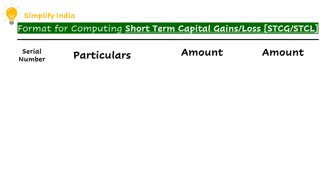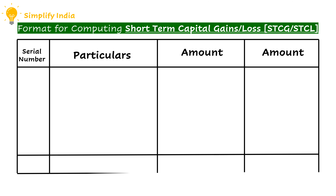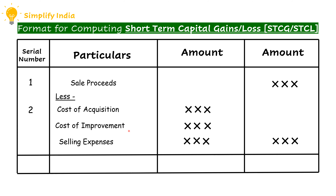Let us start with today's topic. First, we are going to learn the format for computation of short-term capital gain or short-term capital loss. In the format, first we have to consider sales proceeds. From the sales proceeds, we have to deduct cost of acquisition, cost of improvement, and the selling expenses. When we deduct all these three items from the sales proceeds, we arrive at short-term capital gain or short-term capital loss.